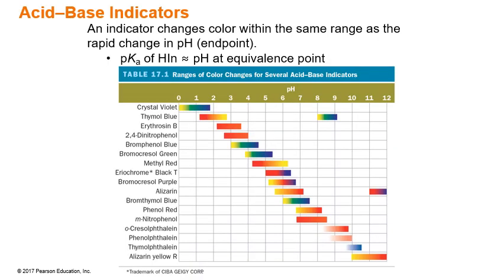So how do you know which indicator to choose for your titration? It depends on where the endpoint is — where the most rapid change in pH occurs. We want to pick an indicator that has a pKa that is about where the equivalence point is. Depending on which solutions you're titrating, there's a wide variety of indicators that can be used, and we've already seen this in the pH lab.